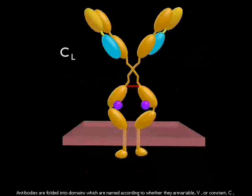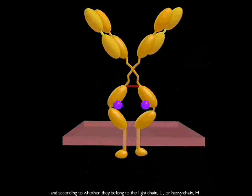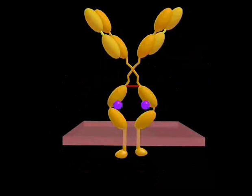Antibodies are folded into domains, which are named according to whether they are variable V or constant C, and according to whether they belong to the light chain L or heavy chain H.